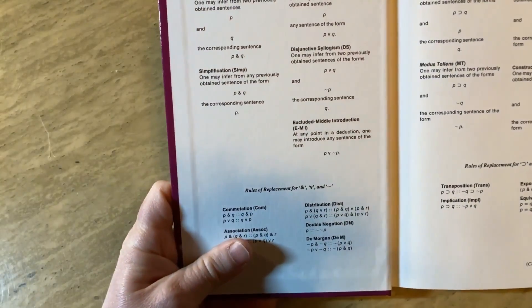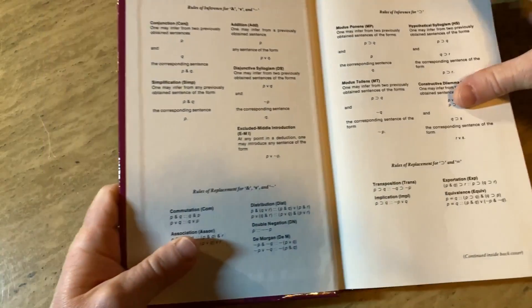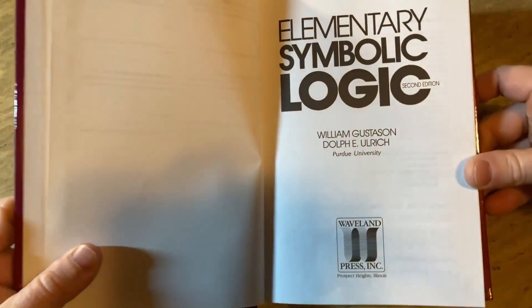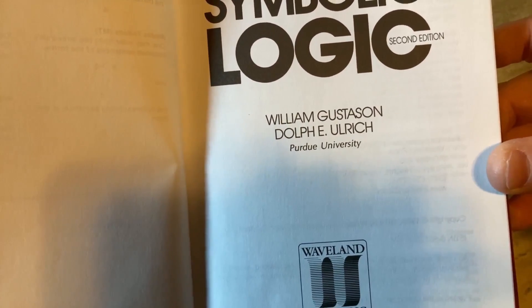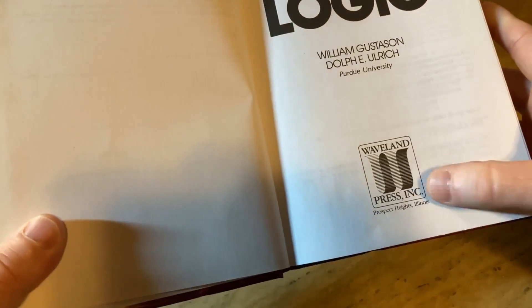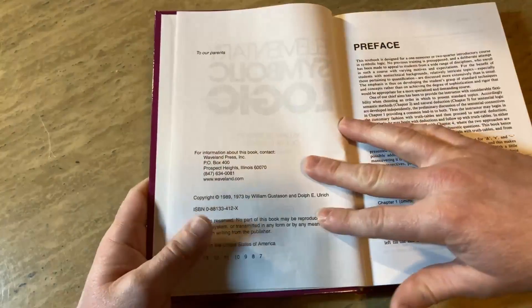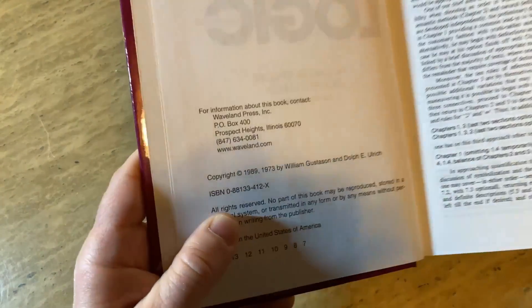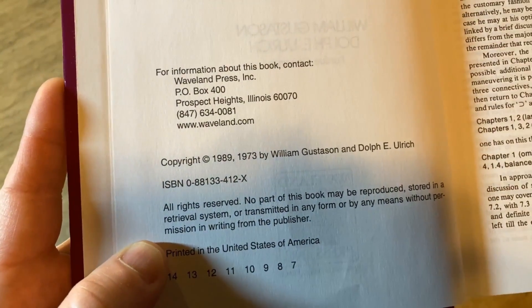So you open up the book, let's take a look at it. And it's got all the symbols and stuff that you need for logic. Elementary Symbolic Logic, William Gustafson, Dolph E. Ulrich, Purdue University, Waveland Press. They have some really good books that they have published. And here's the copyright. 89 is this edition, and 73 is the original one.